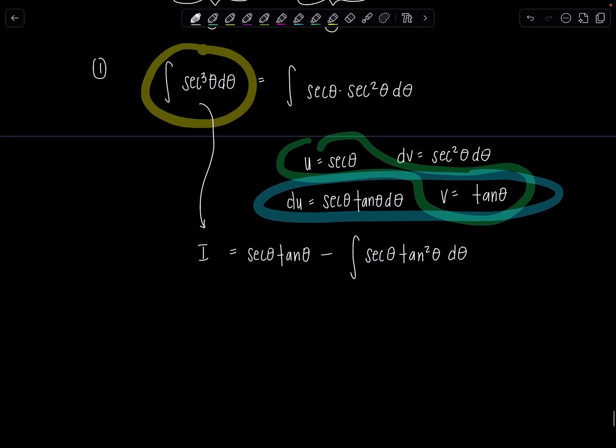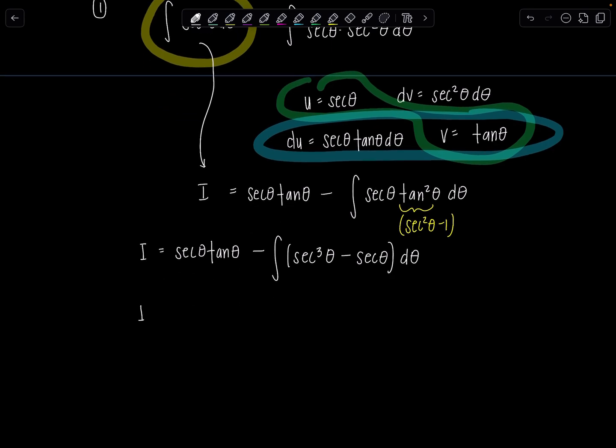To get the boomerang to come back to us, we're going to replace tan squared theta with secant squared theta, minus one, and distribute. So my integral, antiderivative of secant cubed theta, equals secant theta, tan theta, minus integral. I'm going to distribute now this secant theta to secant squared theta, minus one, and I'll have secant cubed theta, minus secant theta, d theta. Do you see how our integral came back to us? Our boomerang has returned. I equals secant theta, tan theta. Let me split it up so it's crystal clear. Minus integral secant cubed theta, d theta, plus integral secant theta, d theta. Here it is. This is i.